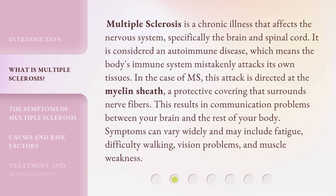Multiple sclerosis is a chronic illness that affects the nervous system, specifically the brain and spinal cord. It is considered an autoimmune disease, which means the body's immune system mistakenly attacks its own tissues. In the case of MS, this attack is directed at the myelin sheath, a protective covering that surrounds nerve fibers. This results in communication problems between your brain and the rest of your body. Symptoms can vary widely and may include fatigue, difficulty walking, vision problems, and muscle weakness.